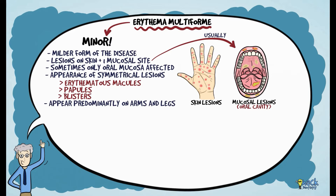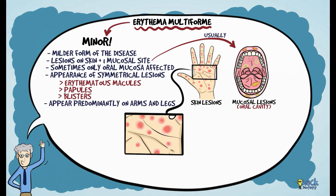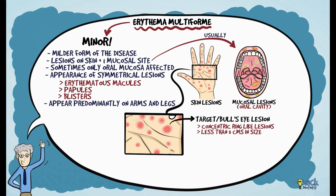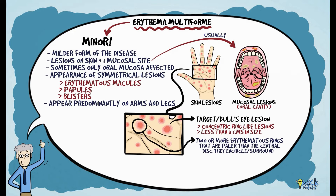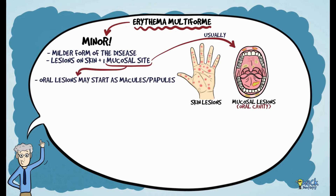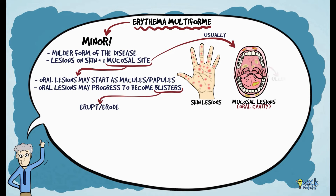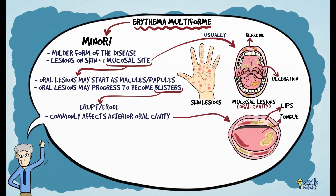A very characteristic feature of the disease is the appearance of target lesions or bullseye lesions — concentric ring-like lesions less than three centimeters in size with two or more erythematous rings that are paler than the central disc they encircle. Oral lesions may start as macules or papules, progressing to become blisters that may erupt or erode, causing ulcerations and bleeding. The disease commonly affects the anterior oral cavity, with patients presenting with swollen, ulcerated, bleeding, and crusted lips.